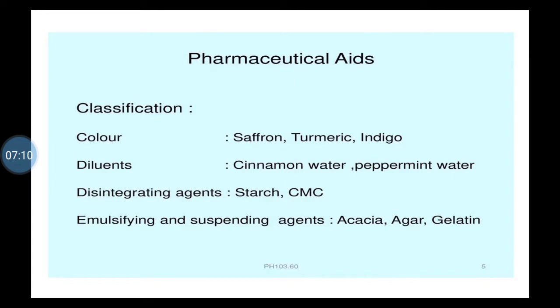Then disintegrating agent — these substances help to disintegrate, meaning they help break the tablet when it comes in contact with water or any other liquid. Disintegrating agents include starch. Then emulsifying and suspending agents — acacia, agar, gelatin. Acacia means dink, as you might know. Emulsifying agent is used to mix or form a homogeneous preparation.